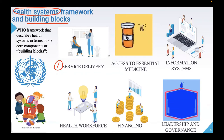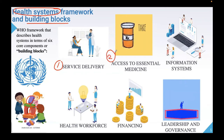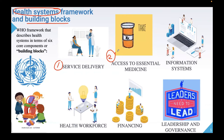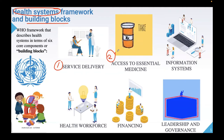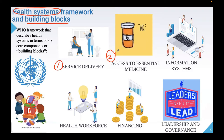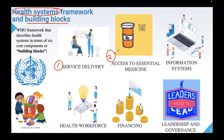Another building block is access to essential medicine. Access to essential medicine or other medical products is where procurement and supply programs need to ensure equitable access, assured quality, and cost-effective use. We need a correct system in the procurement and supply of essential medicine so that it can be used by our stakeholders.